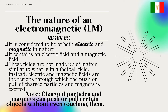These fields are not made up of matter similar to what it is in a football field. Instead, electric and magnetic fields are the regions through which the push or pull of charged particles and magnets is exerted. Charged particles and magnets can push or pull certain objects without even touching them.